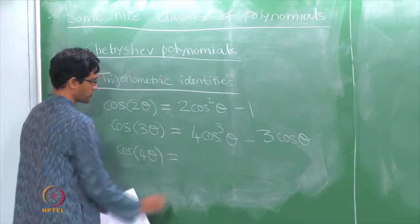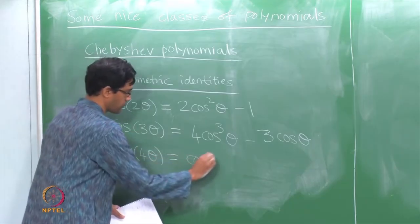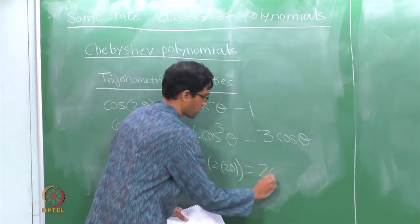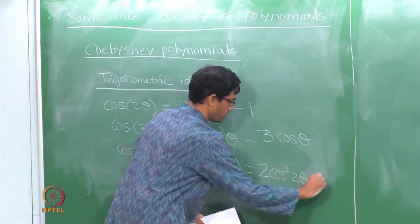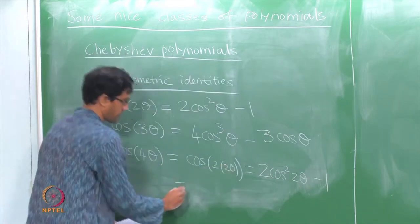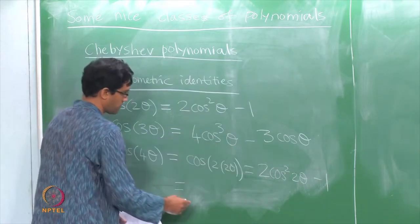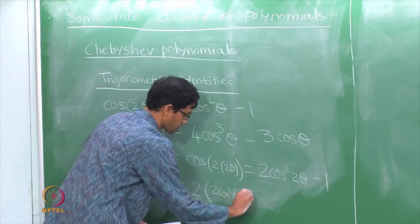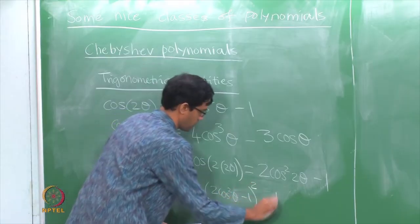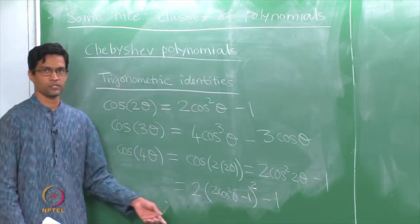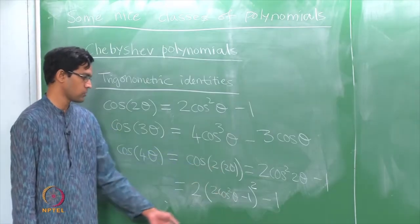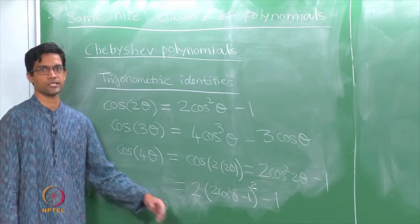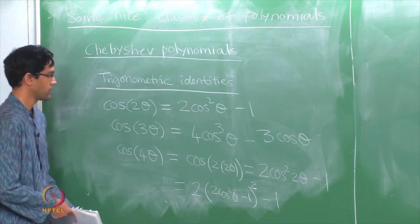Similarly, cos of 4 theta can be computed from cos 2 theta by thinking of it as cos of 2 times 2 theta. That is going to be 2 cos squared 2 theta minus 1, and I will further write out cos 2 theta as an expression in terms of cos theta. So this is 2 times (2 cos squared theta minus 1) whole square minus 1. The final answer is going to be some expression which is a combination of powers of cos theta.